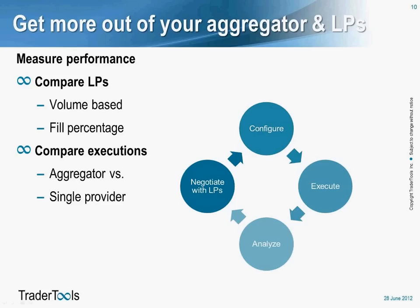You go back to the liquidity provider, show them the data, and negotiate: if they want to increase flow to you, this is what they need to do. You then reconfigure your aggregator to meet the new rules you've negotiated, and go through that cycle of executing and analyzing again. This is something we do with our customers on an ongoing basis — we provide statistics to make sure they're constantly getting feedback on how the aggregator and each liquidity provider is performing.